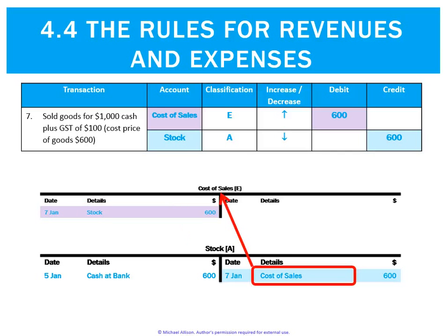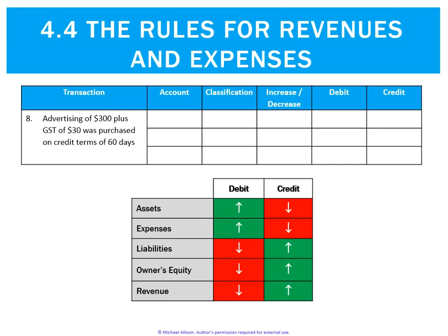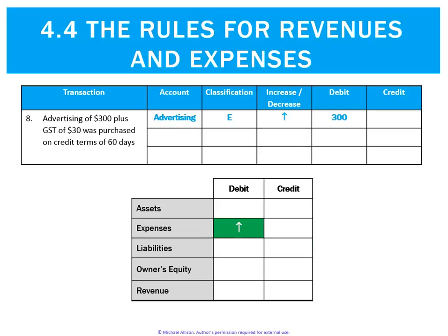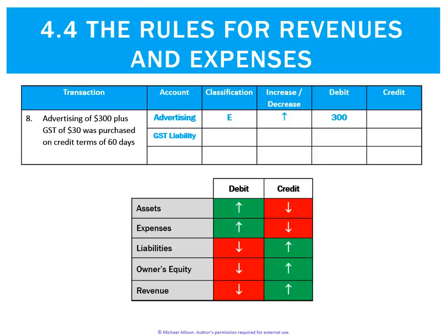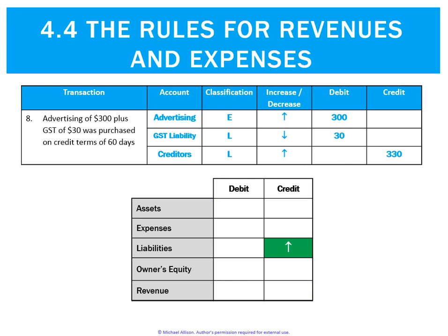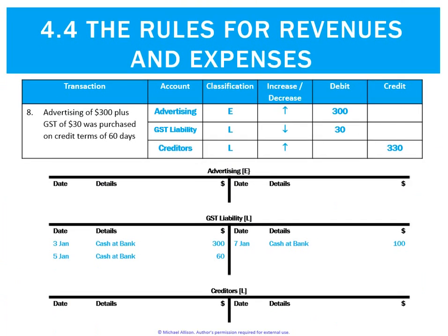Now let's look at an expense: advertising of $300 plus GST of $30 was purchased on credit terms of 60 days. Advertising is an expense that is increasing, so it goes on the debit side. The GST here is a liability — since we are the one being charged it, that decreases our GST liability, so it is also a debit. Creditors are a liability that is increasing, so they must go on the credit side. Debits equal credits.